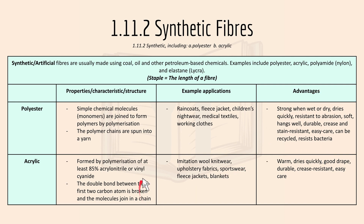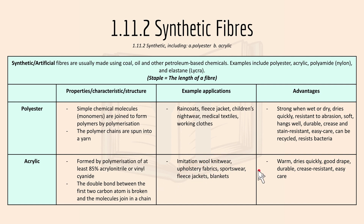Acrylic is formed by polymerization of at least 85% of its component materials. The double bond between the first two carbon atoms is broken and the molecules join into a chain — the process of polymerization. Examples include sportswear, blankets, and fleece jackets. Advantages: it's warm, dries quickly, durable, and crease resistant.